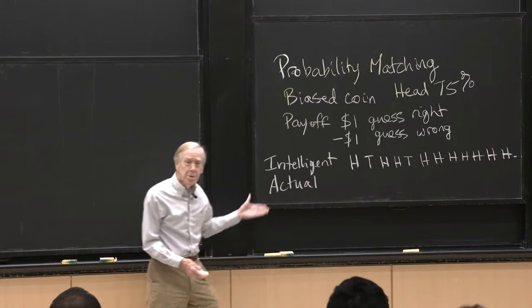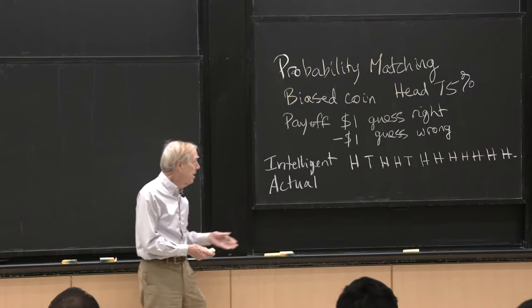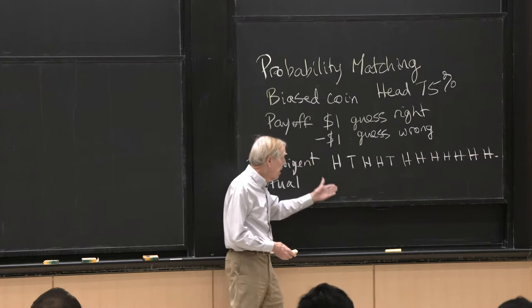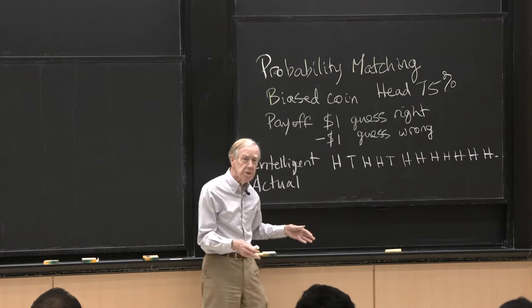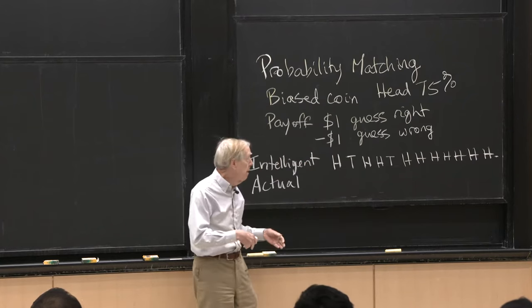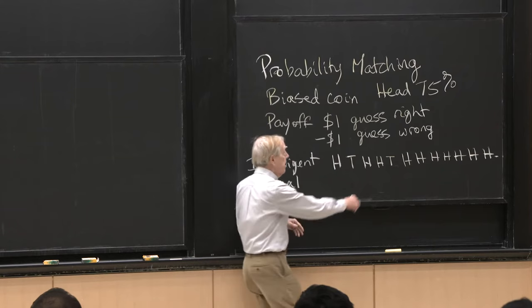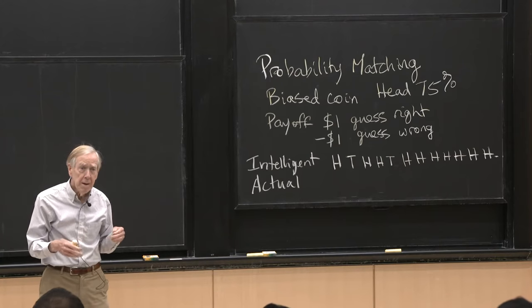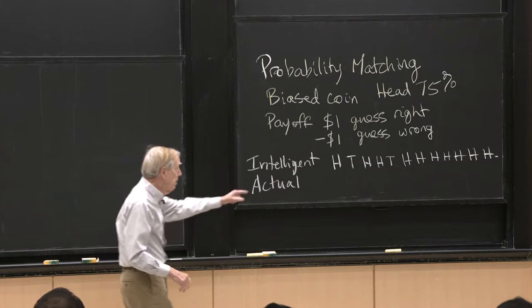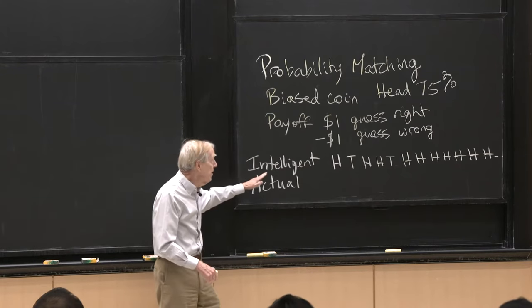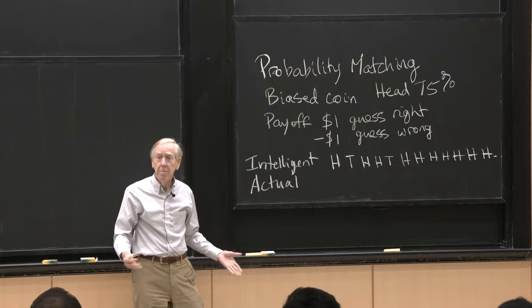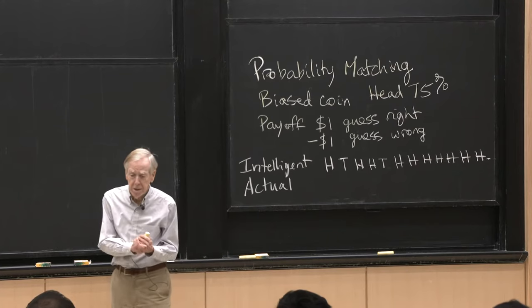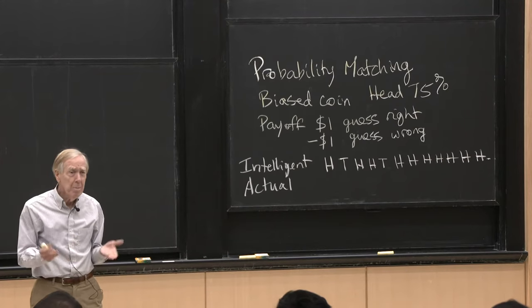So you just want to get as many right choices as possible from this coin flip that continues. What should you do? Well, what I guess I hope we would do is we would not know what the probabilities were. So we would guess maybe heads the first time, tails the second time, heads the third time, and so on. But the actual result would be mostly heads. So we would learn at some point, we would eventually learn that we should keep guessing heads. And that would be our optimal strategy to guess heads all the time.